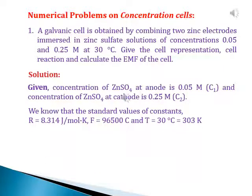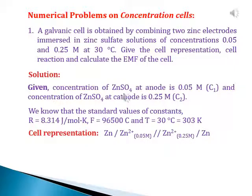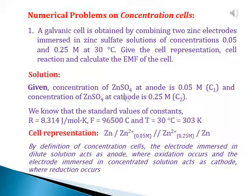We know that the standard values of constants are: R = 8.314 joules per mole per kelvin, F = 96,500 coulombs, and the temperature given is 30 degrees centigrade which is equal to 303 kelvin. Cell representation is given as: Zn | Zn²⁺ (0.05 M) || Zn²⁺ (0.25 M) | Zn, where the double slash indicates the salt bridge.